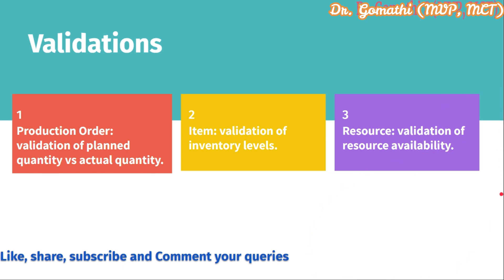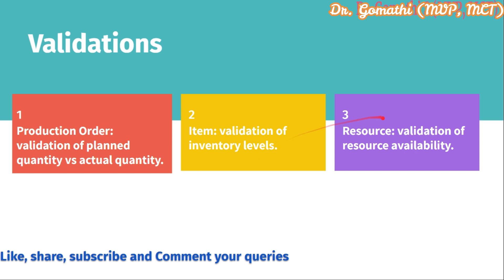Finally, you can write validations at different levels. For the production order, you can write validation of planned quantity versus actual quantity and check resource availability. For the item level, you can write validation of inventory levels to check against production orders. For the resource level, you can write validation of resource availability and check the quantity of items required. These validations can be written either in the page or the table depending on performance considerations.